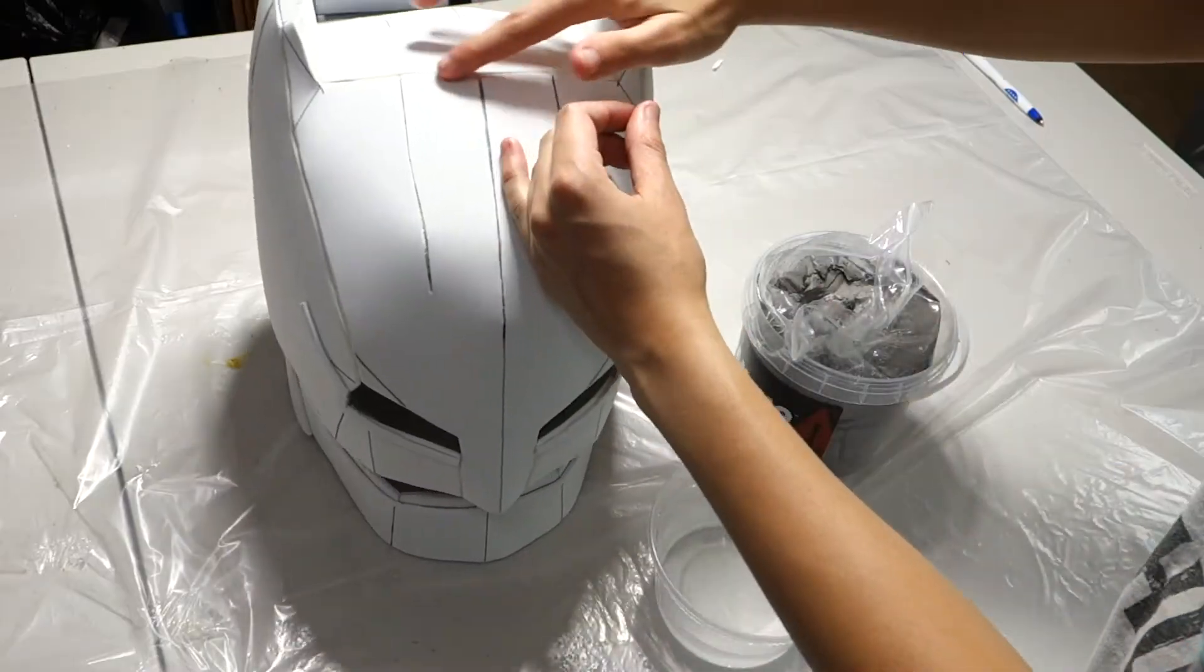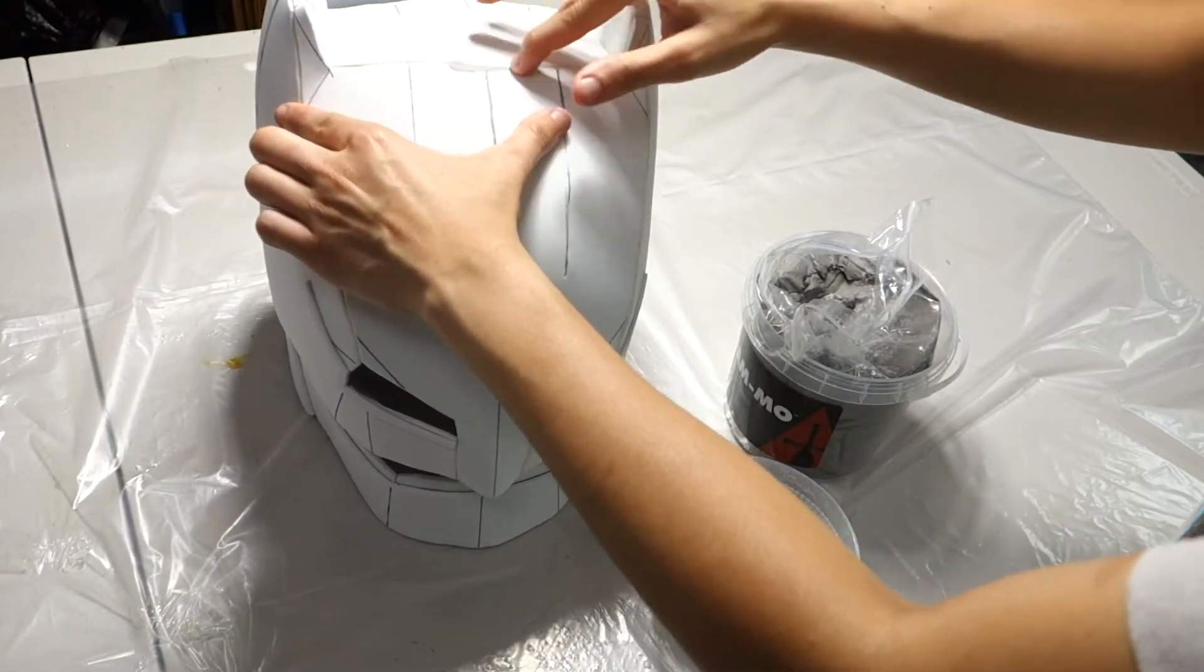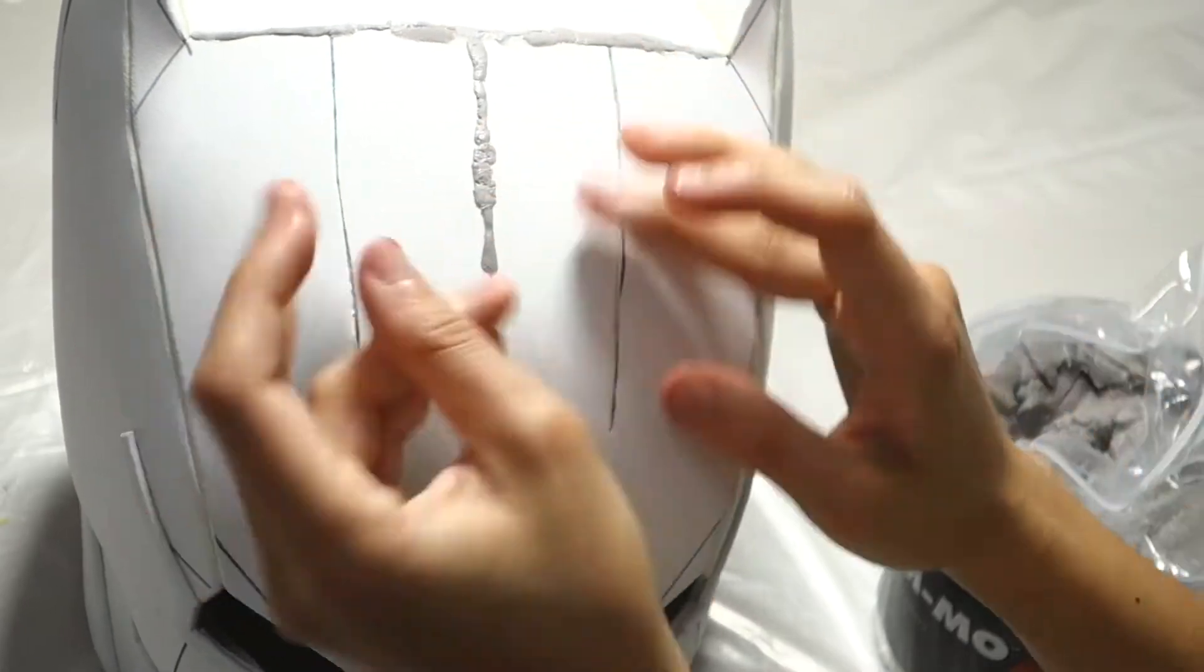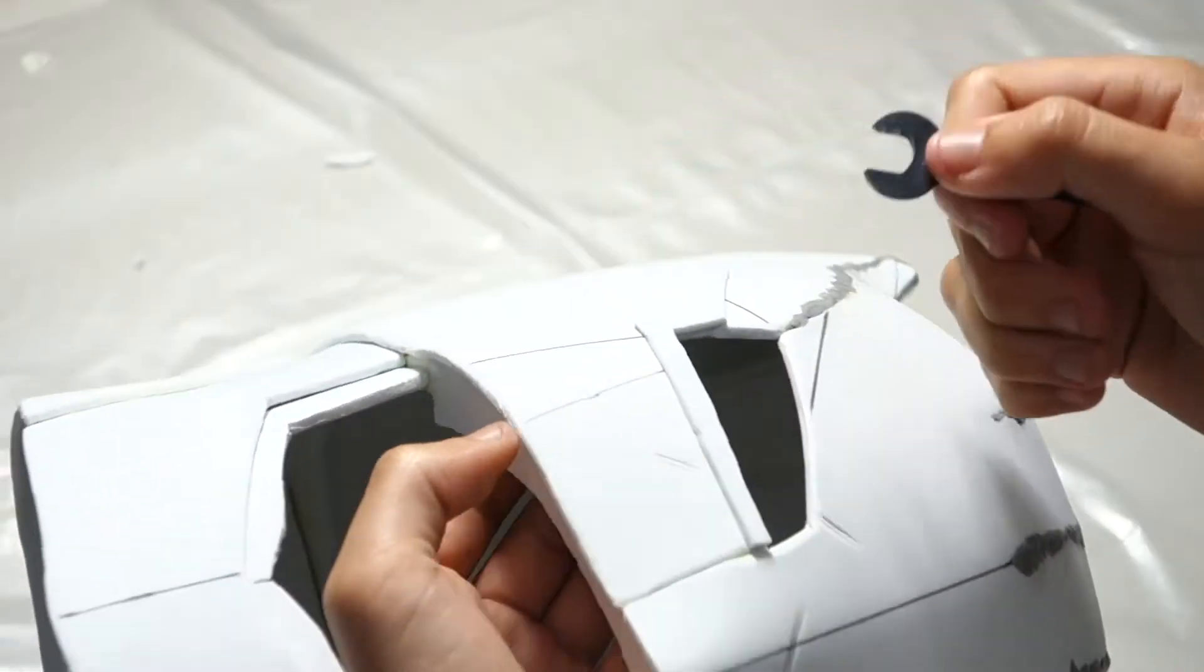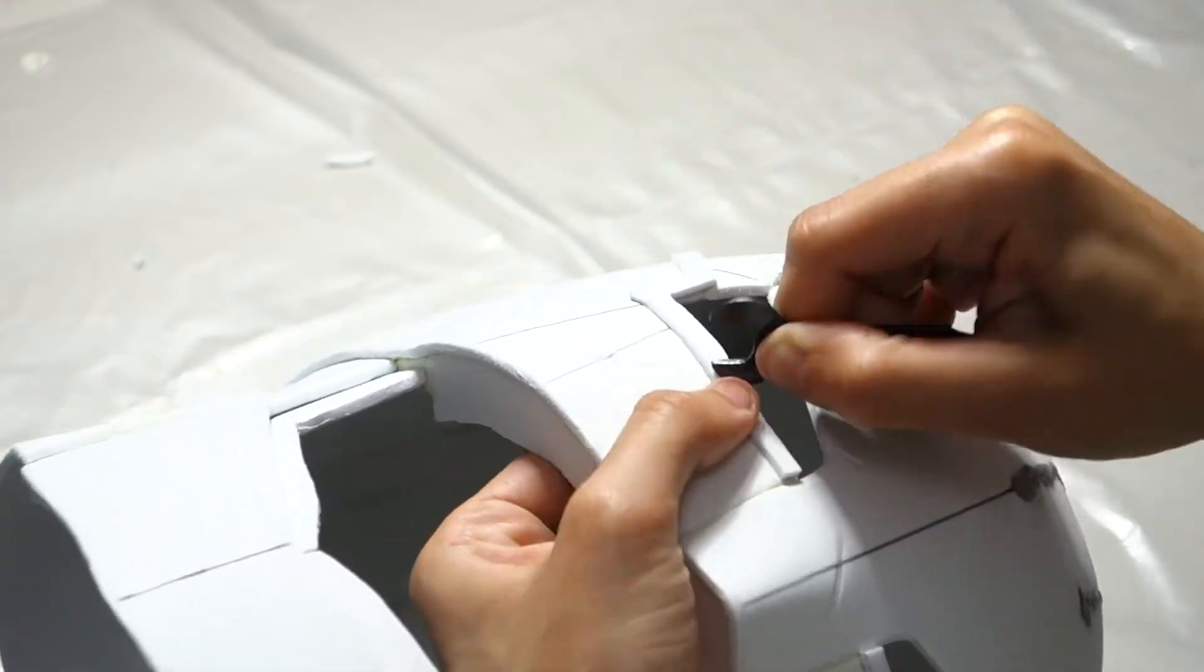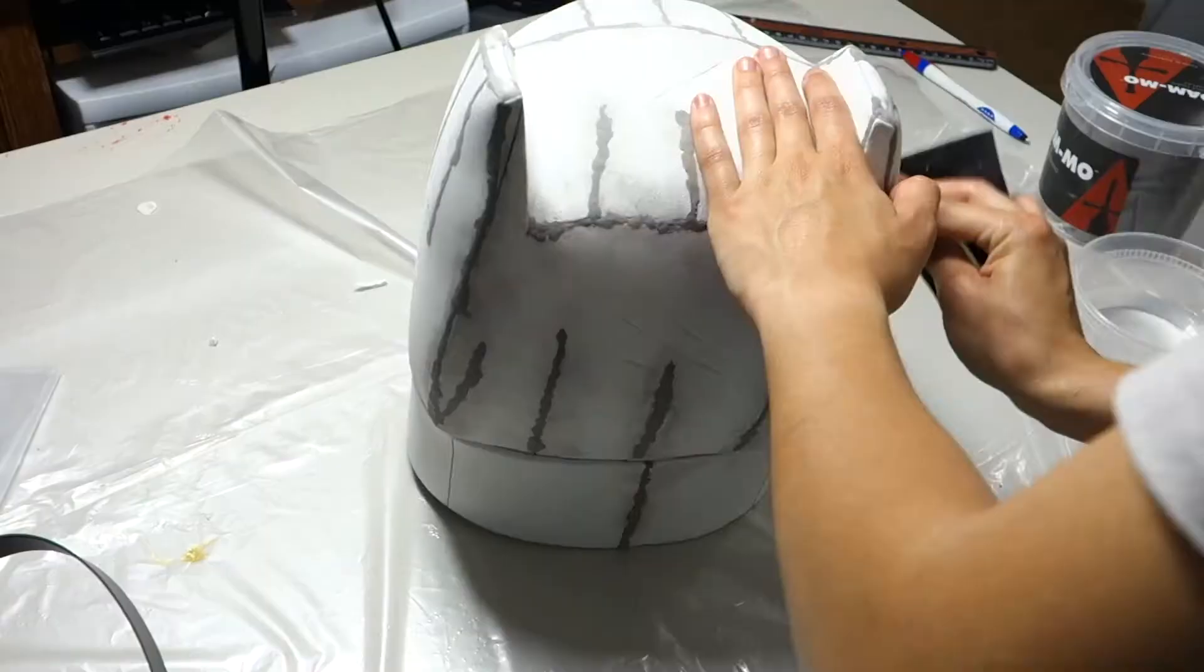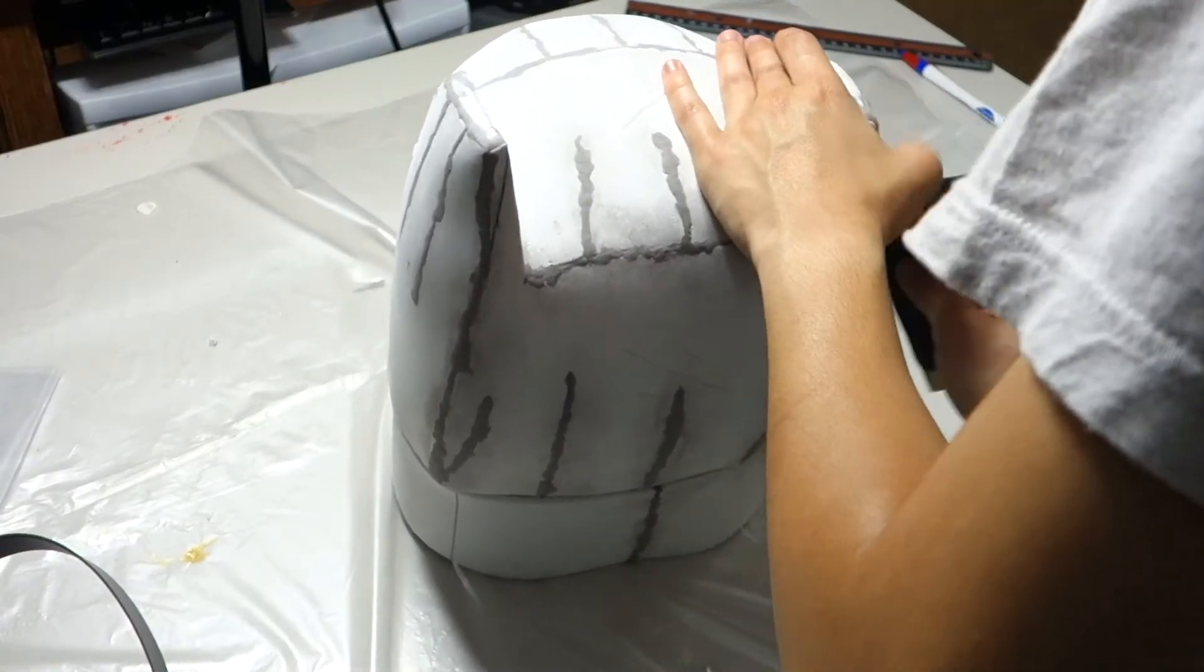If you want to seal up the crevices, you can use FOMO. Dab some water on the foam and then apply the FOMO. It takes about 12 hours for the FOMO to dry. While we waited for it to dry, we added some scratches using the wrench from the Dremel. When the FOMO is fully dry, take a Dremel or sand block to smooth out the FOMO so that it sits flush with the rest of it.